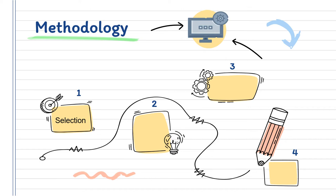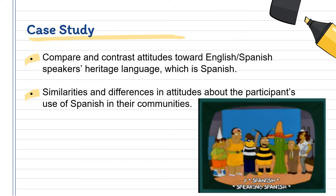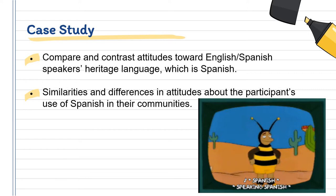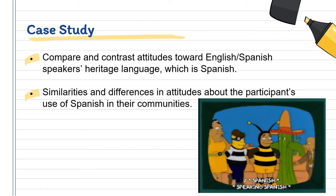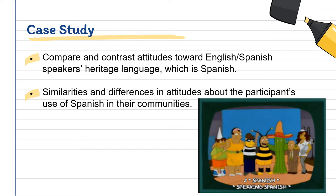To get results, we followed certain steps such as selecting our participants, creating a questionnaire, analyzing the answers from this questionnaire, and then creating the interview and conducting it. This is a case study because we focused on a specific situation that all of our participants share. We compared and contrasted the attitudes of the communities that surround them, in order to get answers that we would analyze for similarities and differences in attitudes depending on each community where each participant lives.